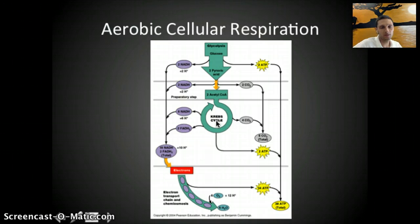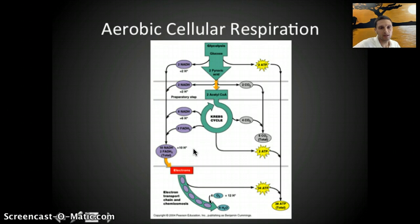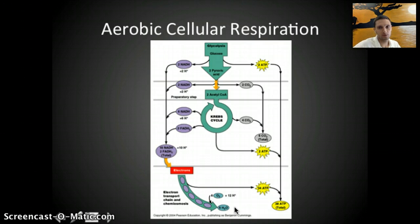The purpose of the Krebs cycle is really to produce a large amount of two high-energy molecules called NADH and FADH2, and we'll see how those are produced in this portion of the video. In part three, we'll look at the electron transport chain, which is responsible for the production of the majority of the ATP.